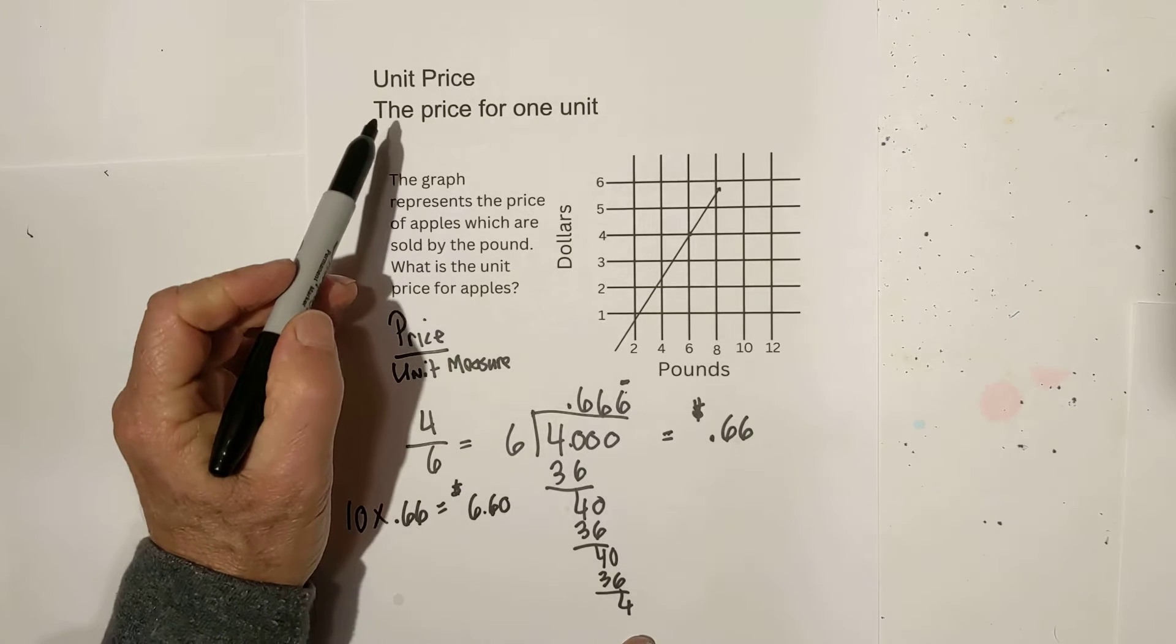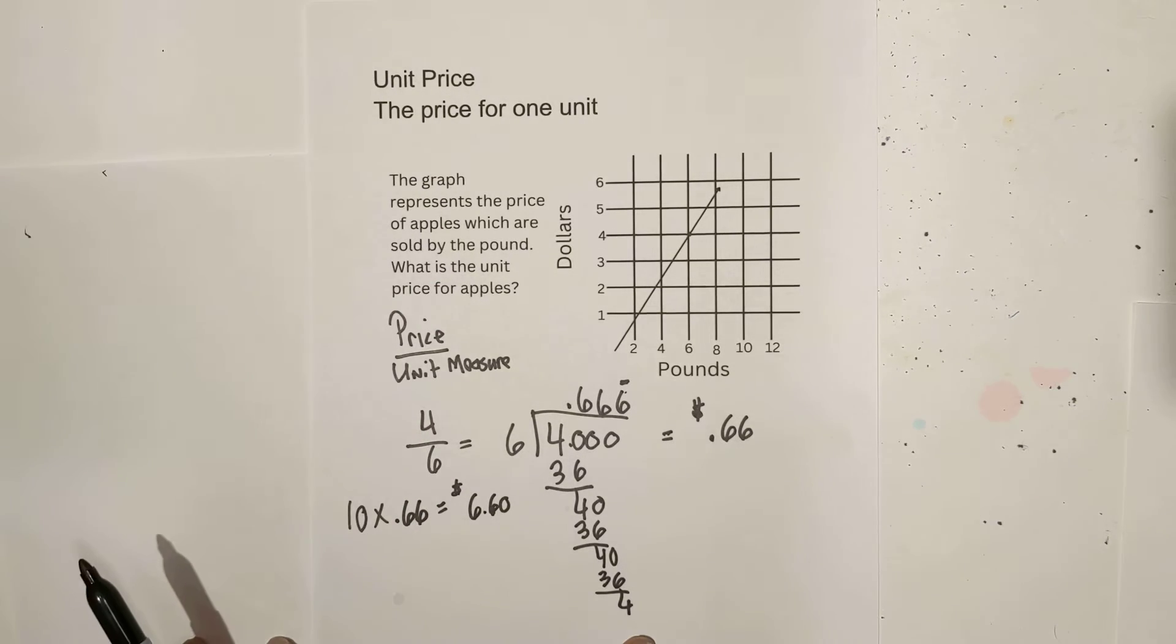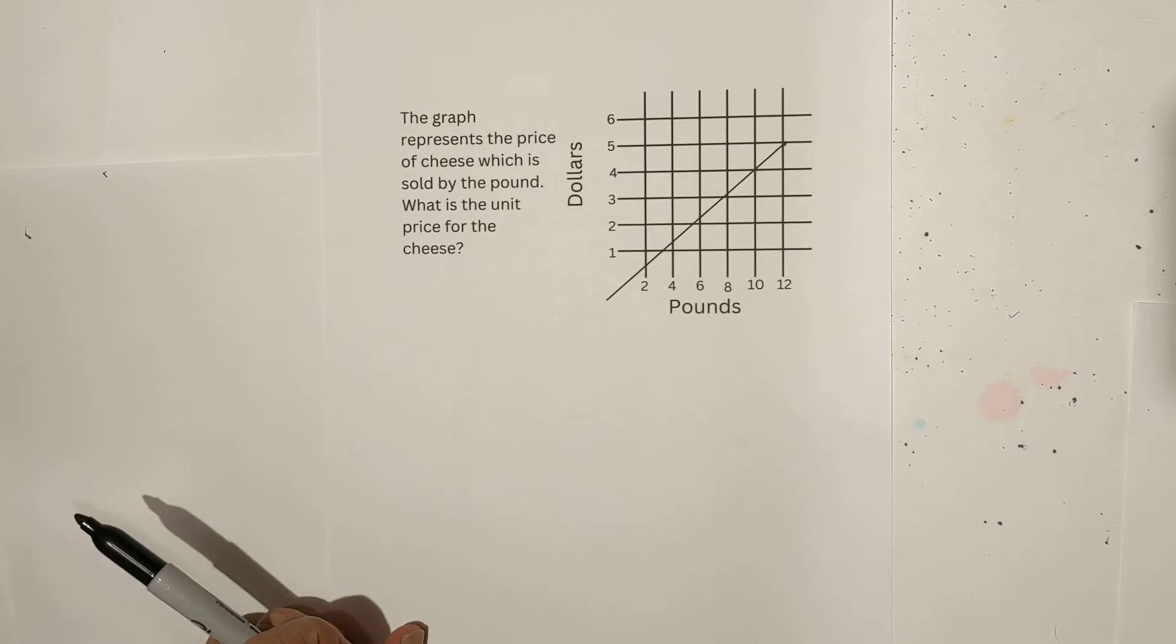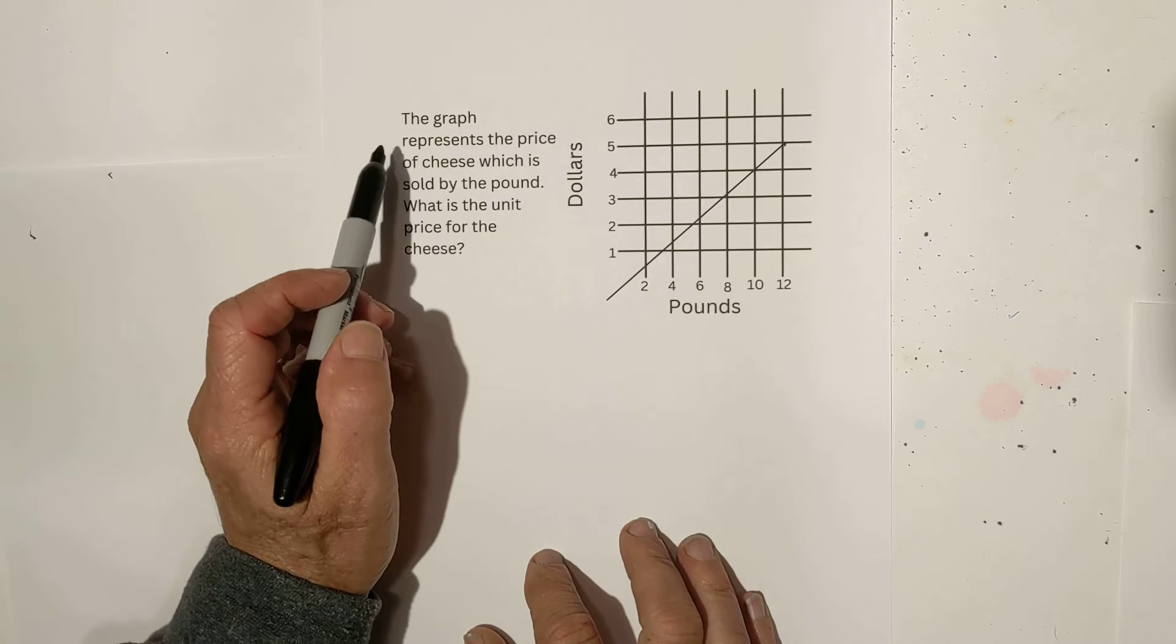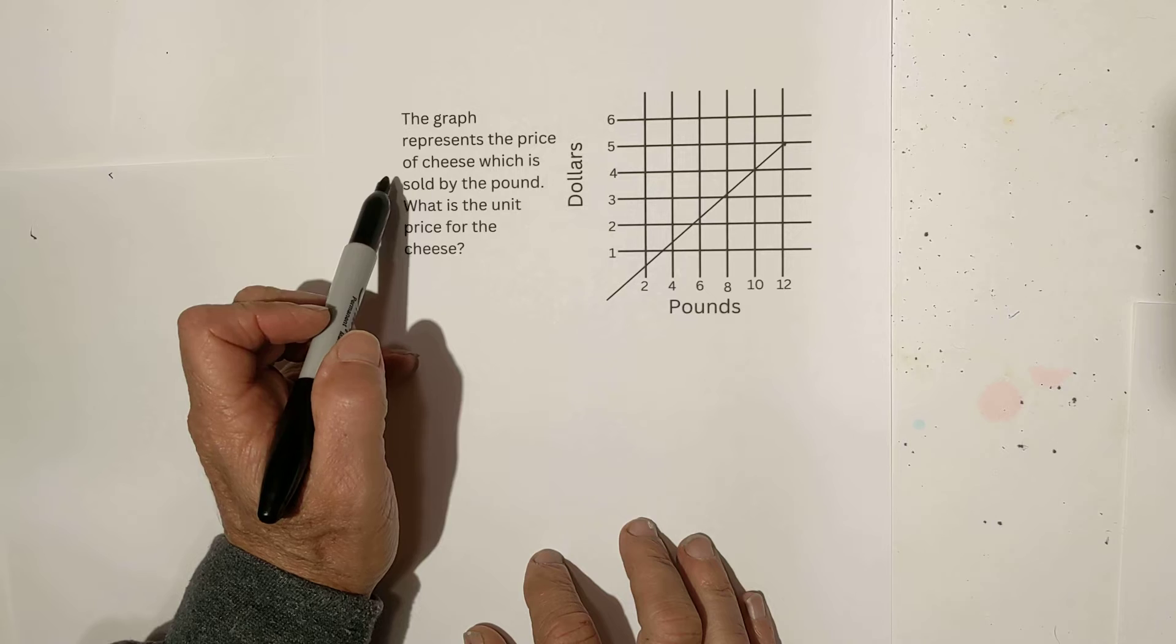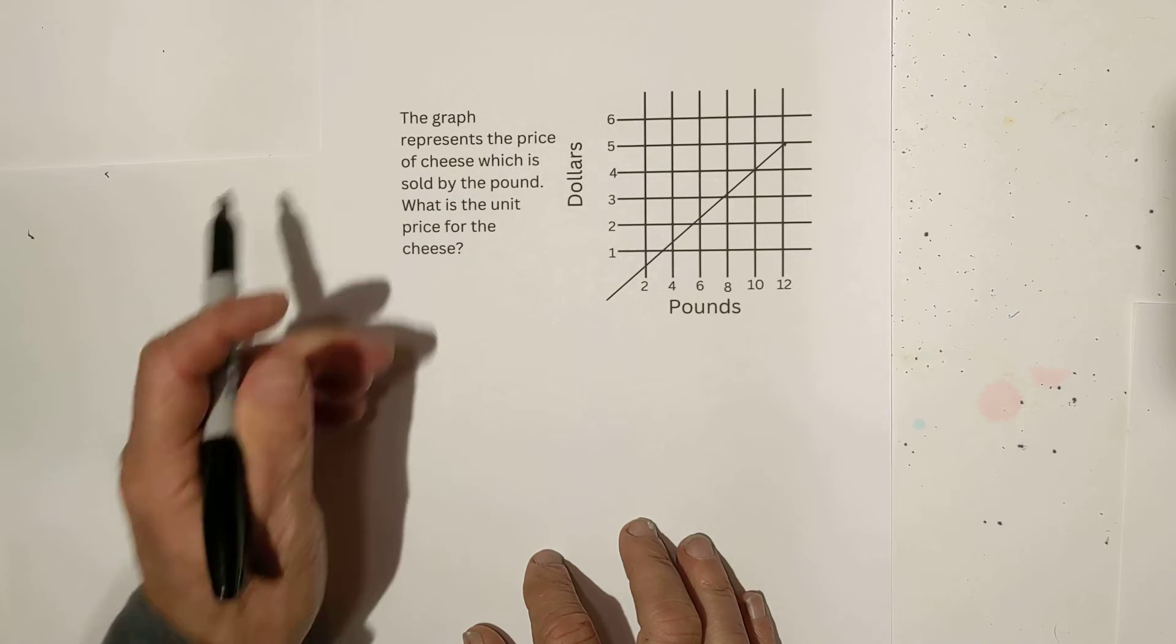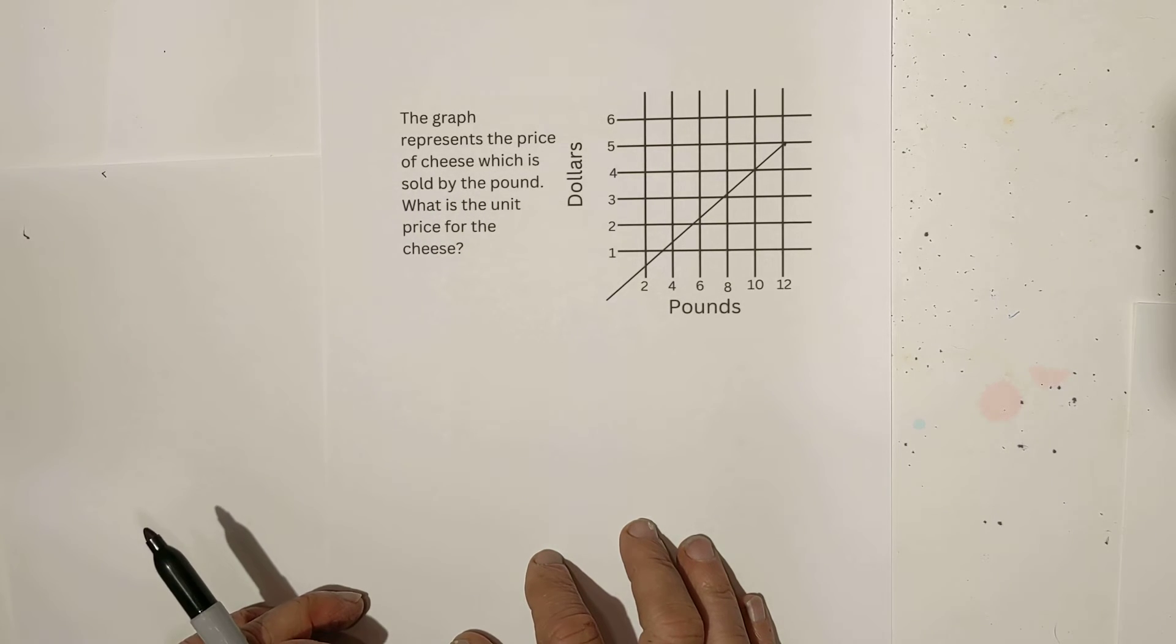So again, the unit price is the price for one unit, and then you can use that to calculate the price for all kinds of different units. Let's look at another example. This time we're shopping for cheese. The graph represents the price of cheese, which is sold by the pound. What is the unit price for the cheese?